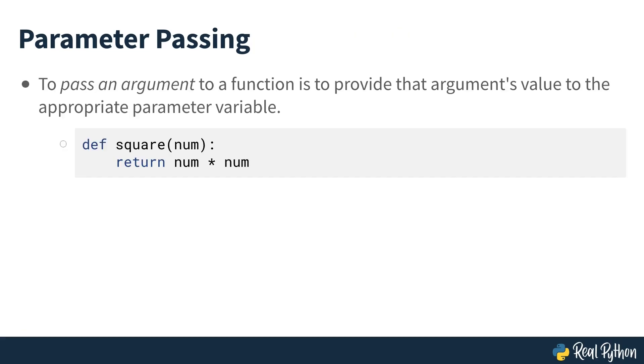To pass an argument to a function means to give that argument value to its associated parameter variable. So in this example, you would pass an argument for the parameter num. This function would then take that value, multiply it by itself, essentially squaring it, and then return that squared result.